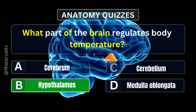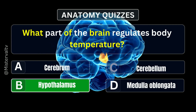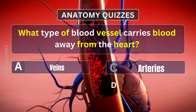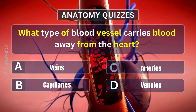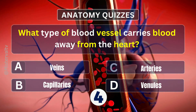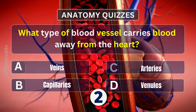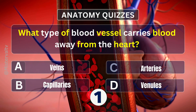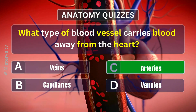What part of the brain regulates body temperature? Answer. B. Hypothalamus. What type of blood vessel carries blood away from the heart? Answer. B. Arteries.